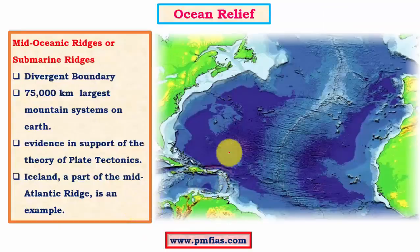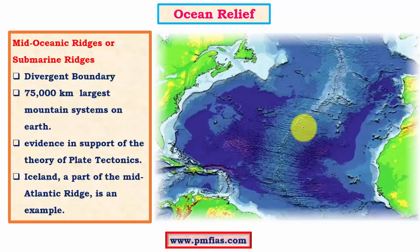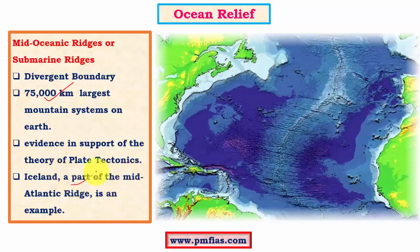The other important feature is the mid-oceanic ridge. At the divergent boundary, there is a volcanic vent with mountain ranges on either side — these are parallel mountain ranges called mid-oceanic ridges, and these are the longest mountain chains on earth. Overall, mid-oceanic ridges extend to a length of about 75,000 km. Along with trenches, they provide strong evidence in support of plate tectonics. One important feature is Iceland, which is a part of the Mid-Atlantic Ridge and is the largest island that exists over the mid-oceanic ridges.